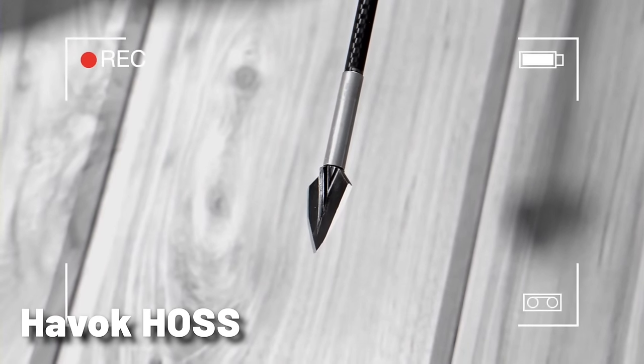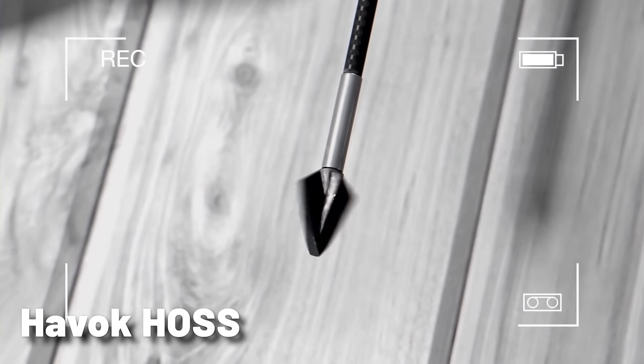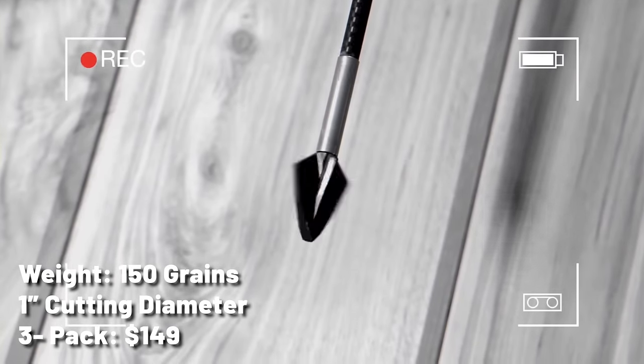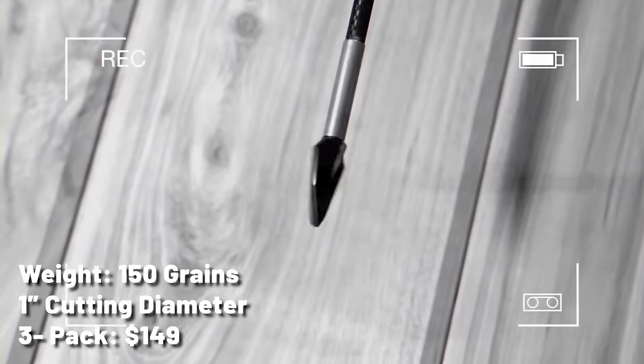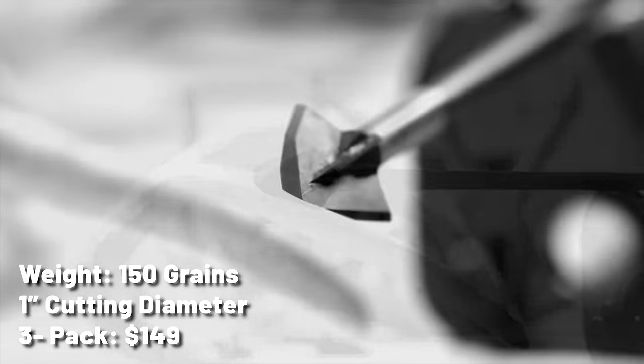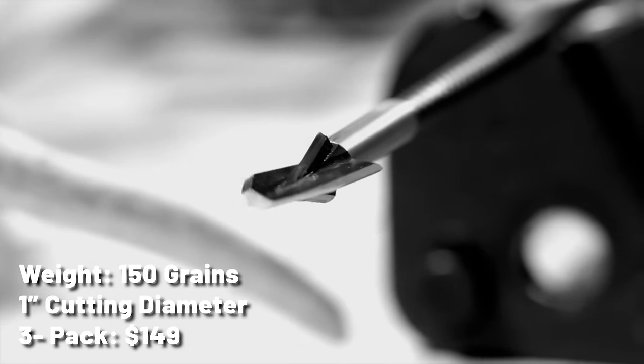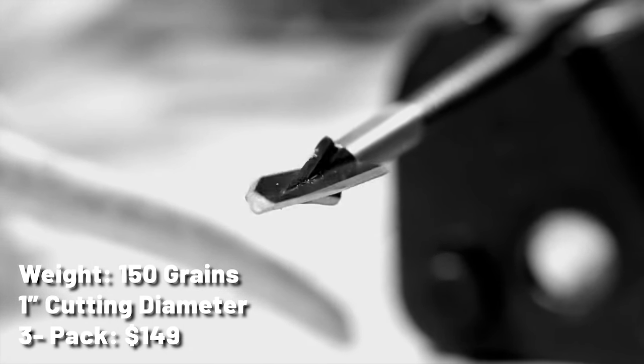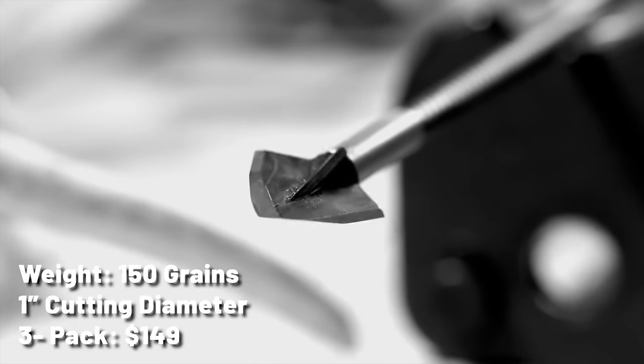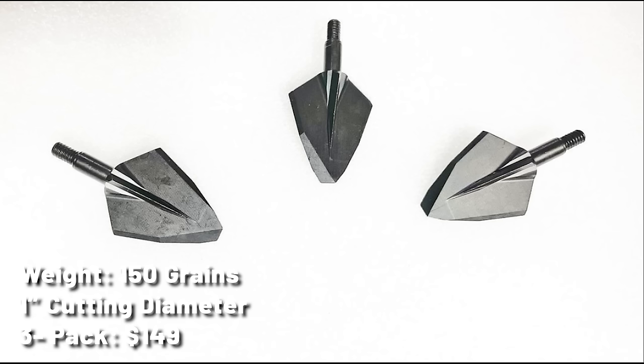Havoc Hoss. New on the broadhead scene for this year is a company called Havoc. The Havoc Hoss 150 features an axe-style single-bevel tip that's designed to split bone, followed by a double-bevel primary cutting surface that is designed to inflict maximum cutting damage. The bleeder blades are designed to be slightly larger than the arrow shaft to help eliminate drag and maximize penetration. The Hoss is machined from S7 tool steel, offers a one-inch primary cutting diameter with one-quarter-inch bleeders on both sides. They are available in 150 grains with a right bevel, and they're going to set you back a whopping $149 for a three-pack.